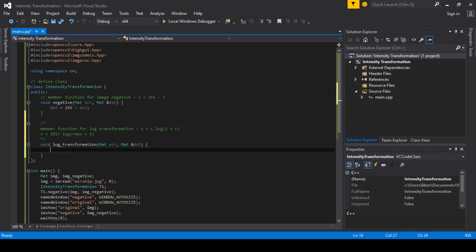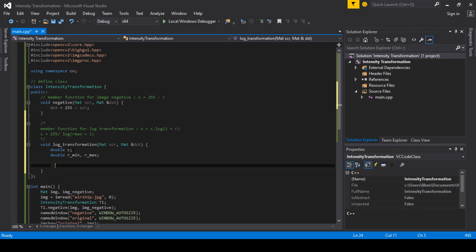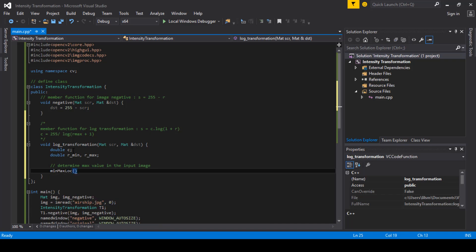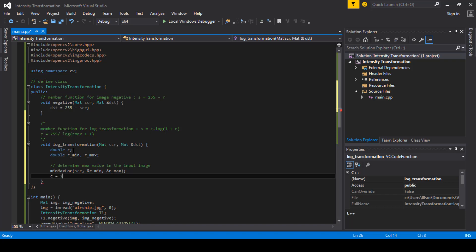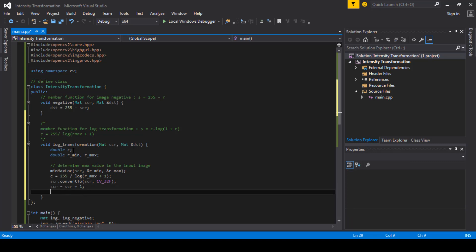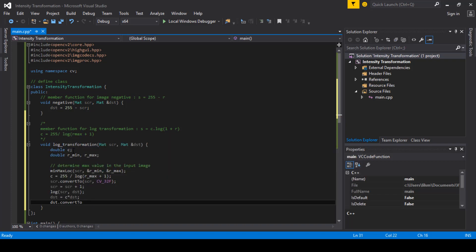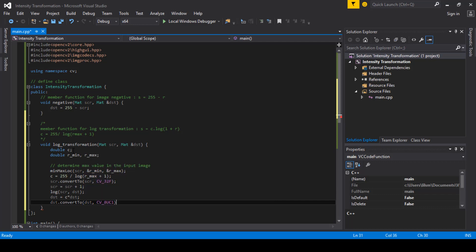I will use minMaxLoc to determine the max value in the image. Now c equals 255 over log(r_max + 1). Here when I used log, c type becomes float and the type of the image is unsigned char, so I need to convert the image to type float. After I finish calculating log transformation of the image, I will convert it back to unsigned char. Now let's see the outcome.